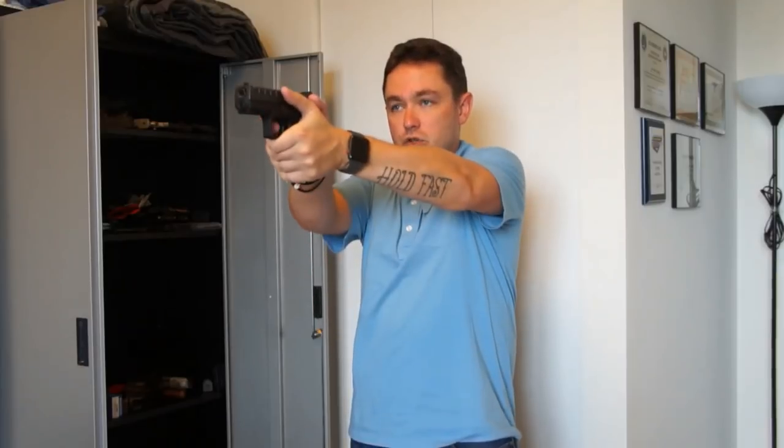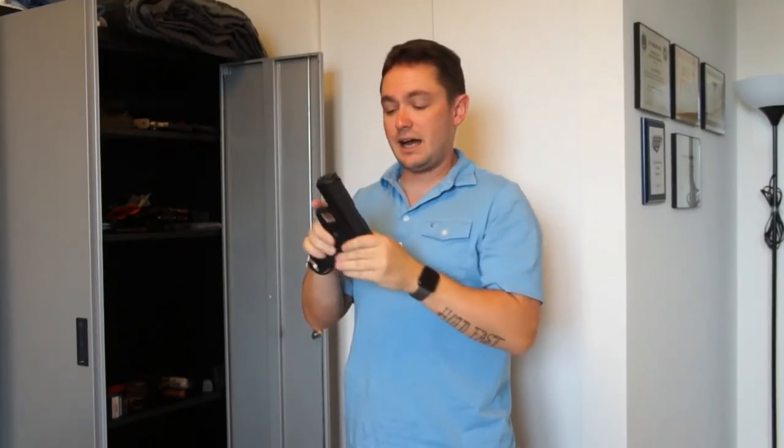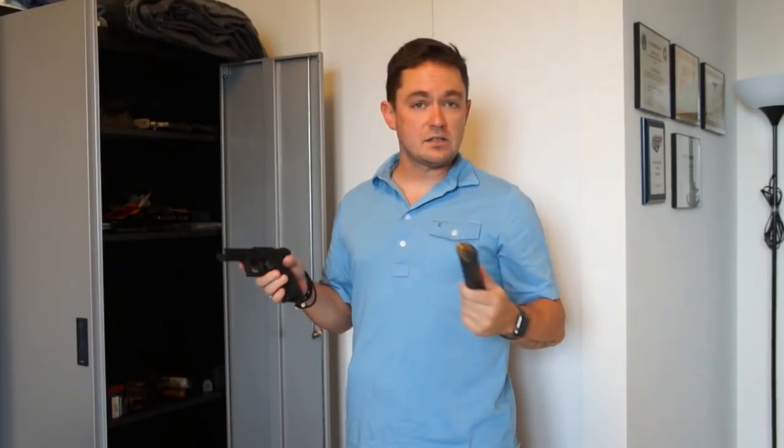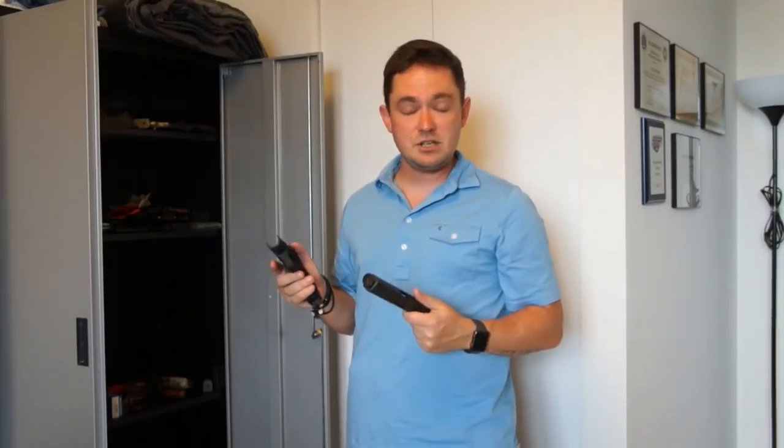And when I shot the gun side by side with first the factory spring and the heavier spring in it, the gun tracked much flatter in recoil using the heavy spring. So I like that heavier weight recoil spring assembly. I have it in the gun and it is available from Beretta's web store right now. It's also available with the competition spring as part of the package. But that's what it looks like.